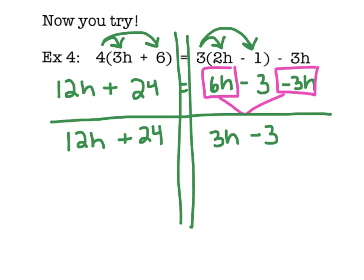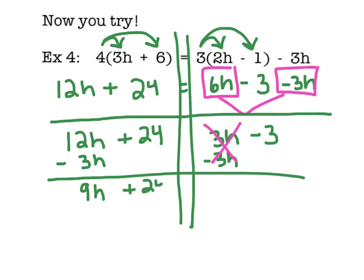Now our job is going to be to get our variables on one side and our constants on the other side. I'm going to get my h's on the left, so I'm going to subtract 3h here. Same thing on the other side. Inverse, guys, you know what to do. 12h minus 3h gives me 9h plus 24 equals negative 3. Don't forget that when these h's canceled out, the 3h's, that minus sign that was in between them now changes its purpose and becomes a negative sign attached to that 3.